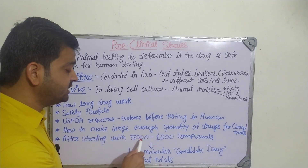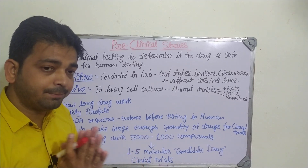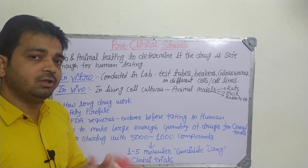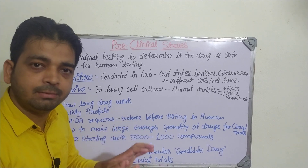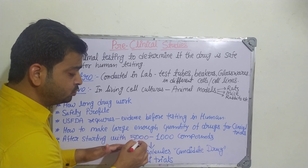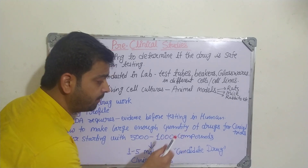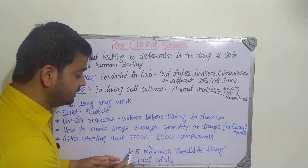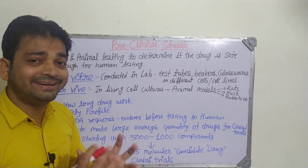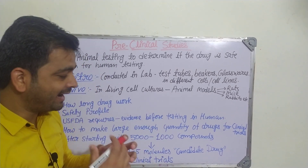Starting with 1000 to 5000 compounds, it's not that we can simply use a plant extract, test it in rats or mice, and conclude based on that data alone. No — that's very preliminary activity. Those doing serious research in different research companies take 1000 to 5000 compounds and ultimately conclude with one to five molecules. That is called a candidate drug — the drug which is actually responsible for giving the particular therapeutic activity.